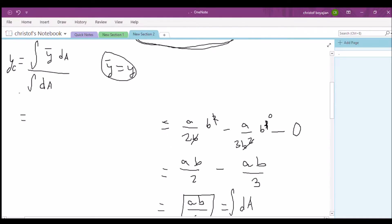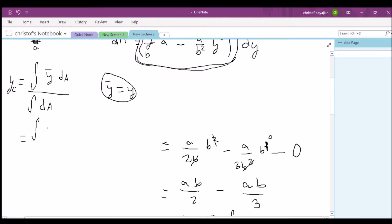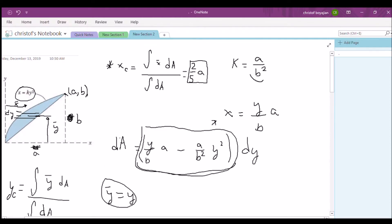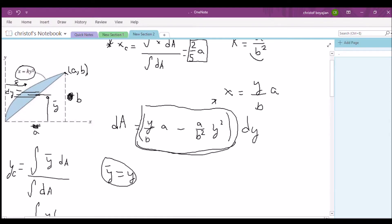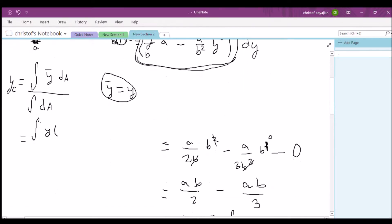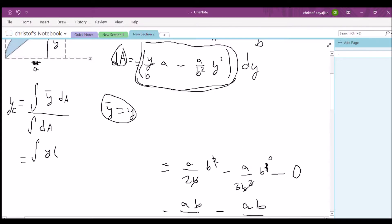So this is going to be our integral of our y bar. We'll just substitute that in with y, and then our dA. So in the previous video we said dA to be this whole expression right here. It's equal to this. So let's go ahead and replace that. So actually let me make my parentheses a little bit larger.